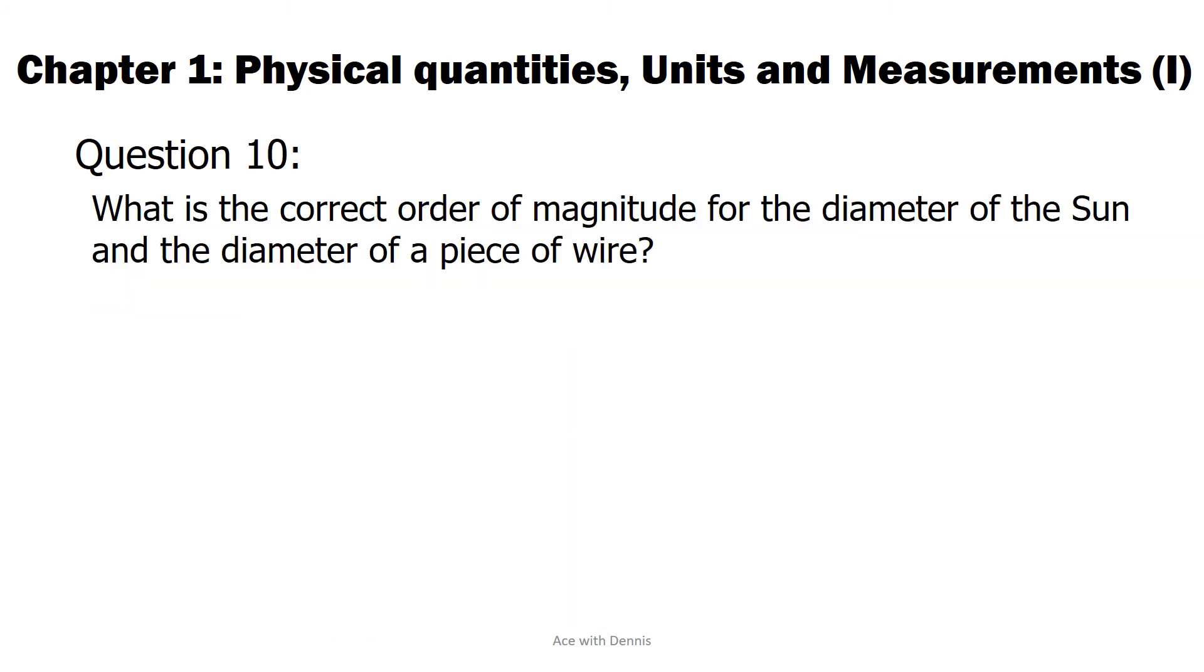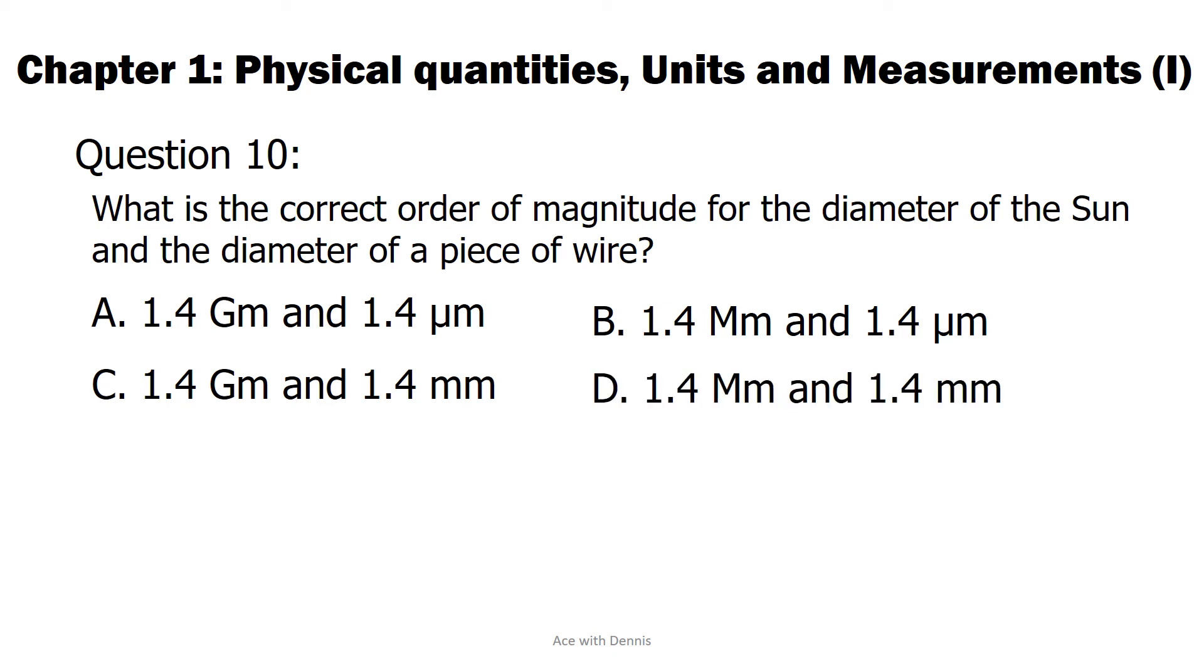Question 10: What is the correct order of magnitude for the diameter of the sun and the diameter of a piece of wire? A. 1.4 gigameters and 1.4 micrometers. B. 1.4 megameters and 1.4 micrometers. C. 1.4 gigameters and 1.4 millimeters. D. 1.4 megameters and 1.4 millimeters.